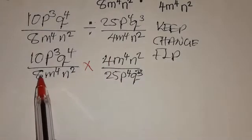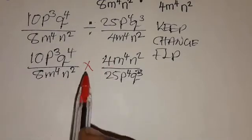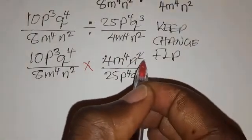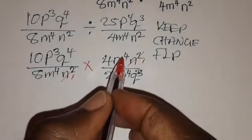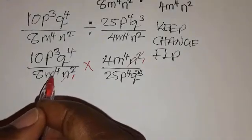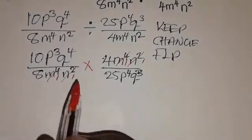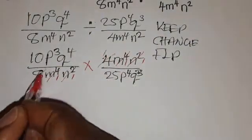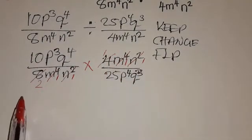Now we can cross-cancel. n squared over n squared gives 1, and n squared over n squared gives 1. m to the power 4 over m to the power 4 also cancels to 1 on both sides. Then 4 into 4 is 1, and 4 into 8 gives 2. We are done cross-canceling this diagonal.